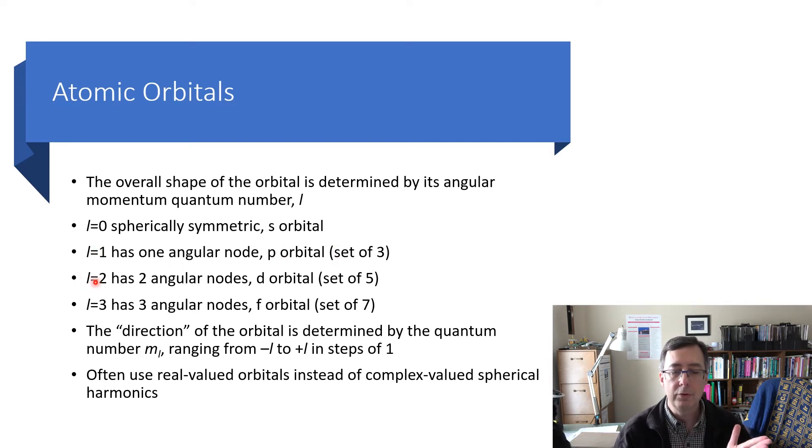If L equals two, and then you have two angular nodes. There are two planes that, when you cross through them, the sign changes. And there's a set of five of these D orbitals. L equals three is an F orbital. It has three angular nodes. There's a set of seven of those. And you could keep on going. You could have G orbitals, and H orbitals, and so on and so forth.